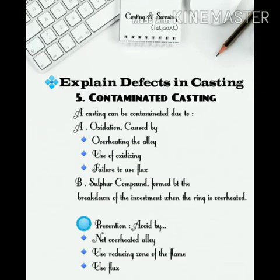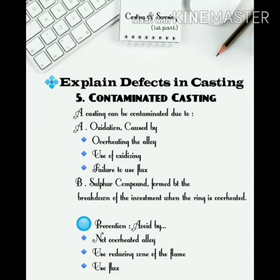5. Contaminated casting — a casting can be contaminated due to: A. Oxidation. Caused by: 1. Overheating the alloy. 2. Use of oxidizing flame. 3. Failure to use flux. B. Sulfur compounds — formed by the breakdown of the investment when the ring is overheated. Prevention: Avoid by 1. Not overheating alloy. 2. Use reducing zone of the flame. 3. Use flux.